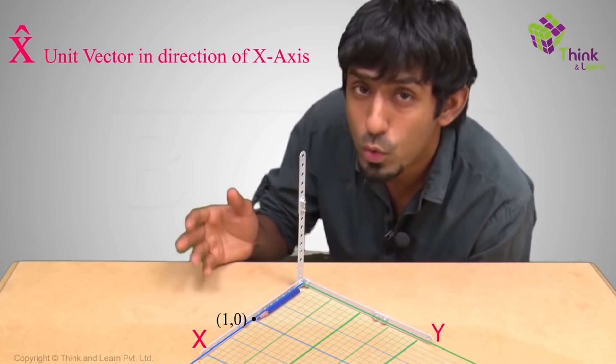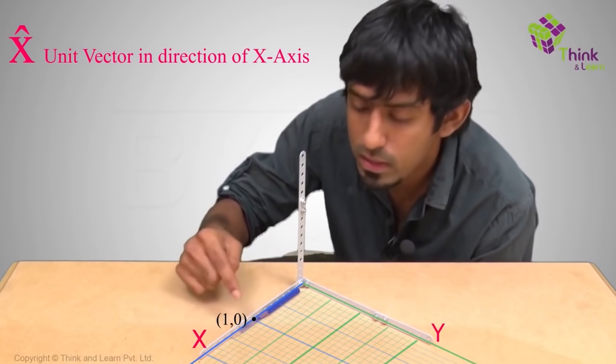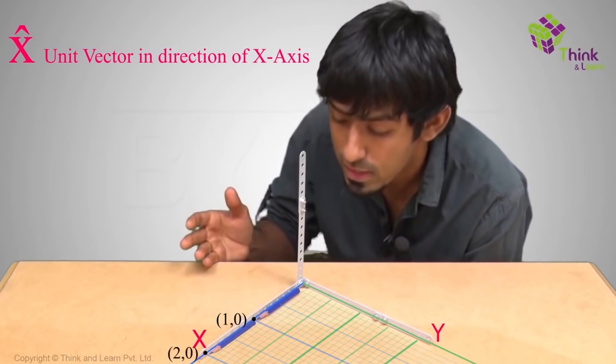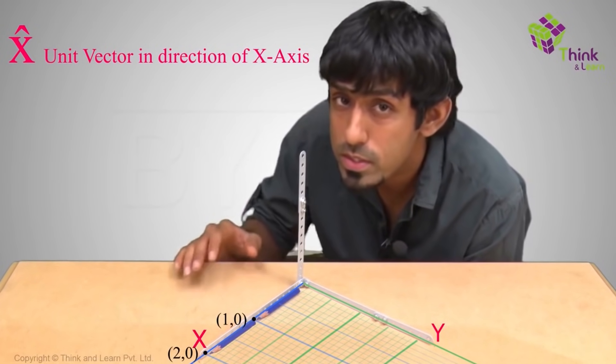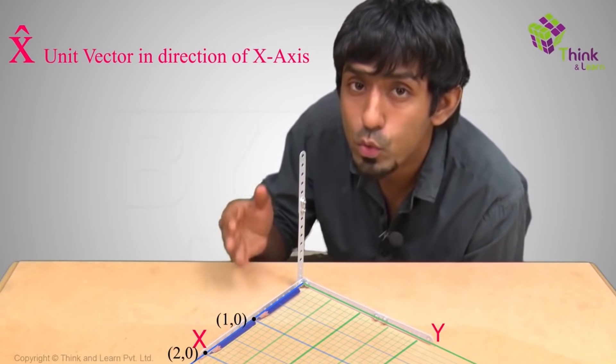If I want to refer to 2, 0, what do I do? I can lengthen this vector, make it double its length and how do I do that? By multiplying it with a scalar, right? So 2 times x cap will give me the point 2, 0. So if I want to refer to 2, 0, I can either say 2, 0 or say 2 times x cap.